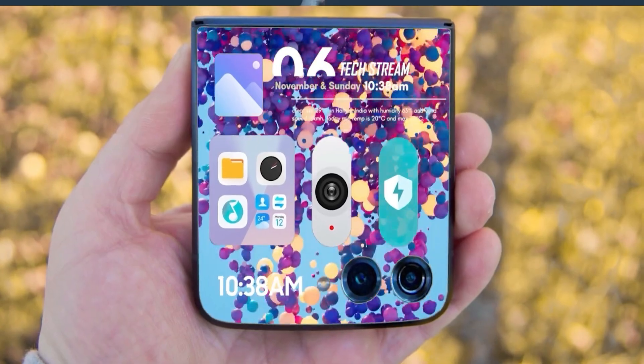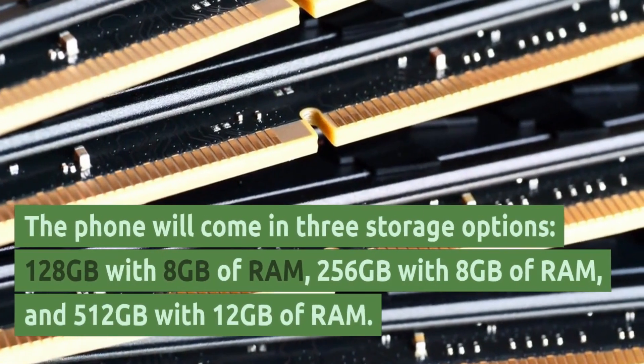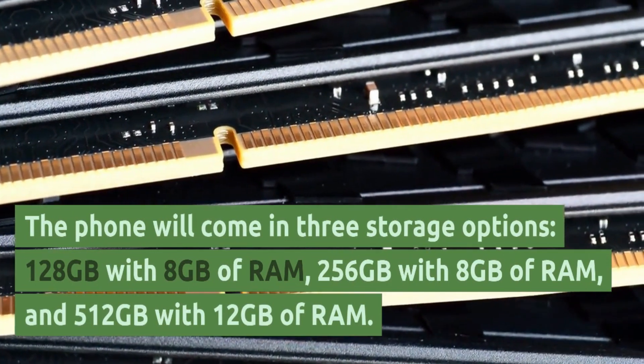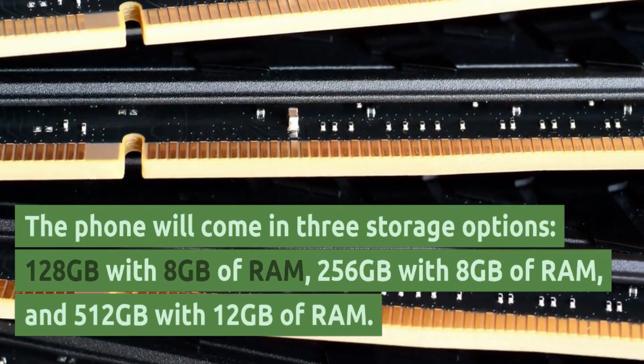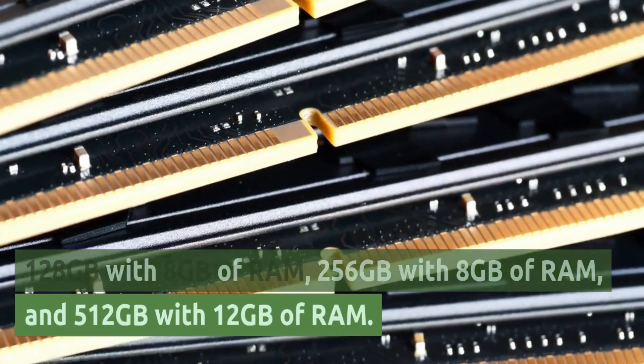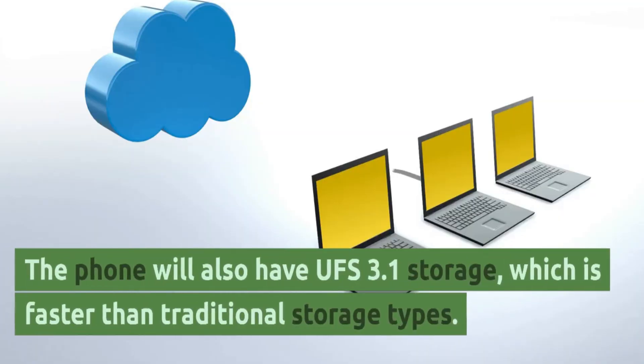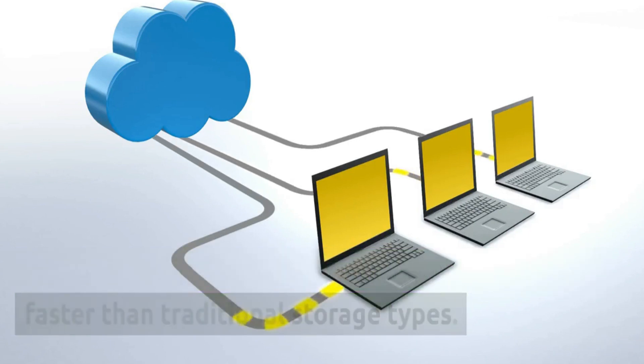The phone will also have an Adreno 740 GPU. The phone will come in three storage options: 128GB with 8GB of RAM, 256GB with 8GB of RAM, and 512GB with 12GB of RAM. The phone will also have UFS 3.1 storage, which is faster than traditional storage types.